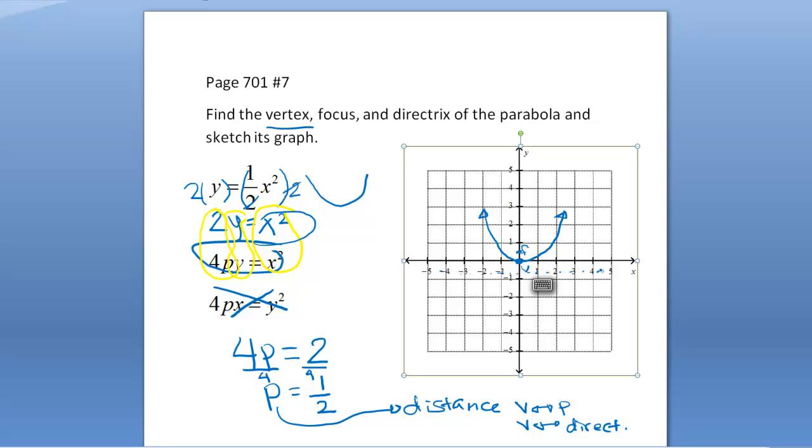So our vertex is at zero zero, so we can write that up here: zero comma zero. Our focus is at zero comma one-half—notice that p right there. The p goes from here to here, right? Zero to one-half is that one-half right there. Our directrix is going to be y equals negative one-half. Notice it's y equals because look how the line is going across.